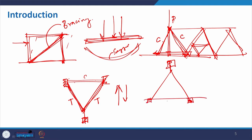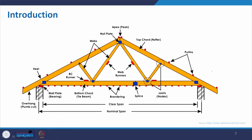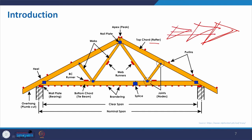This will be in compression, and this will be in tension for the regular truss. It is explained again here with the same thing — why compression and why tension — and this is basically the forces in the simplest truss form. Coming to the different components of the truss, we have the top chord, also referred to as the rafter. When you have multiple trusses, you connect them with this member called purlin.